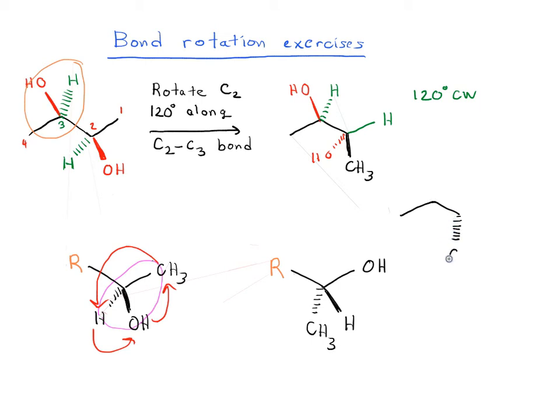So we can draw our CH3 in as a dash. And then we need to draw in the rest of everything here. So this stays the same. That back OH is still a wedge. So that's why I said you can just call this R, right? Because it's not going to change.